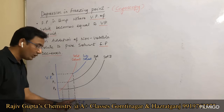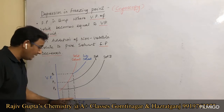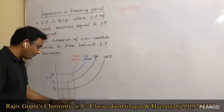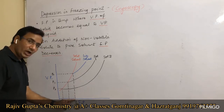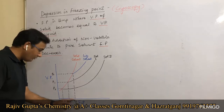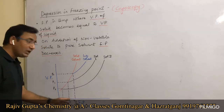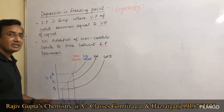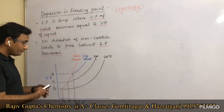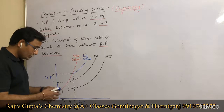The difference between the freezing point of the pure solvent and the freezing point of the solution is the depression in freezing point, denoted ΔTf.